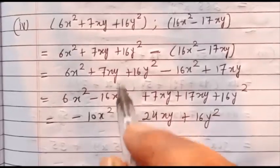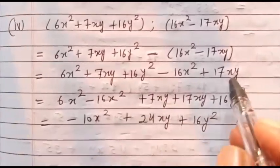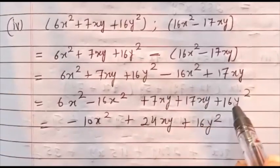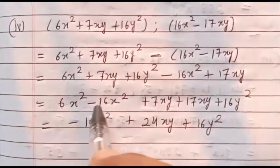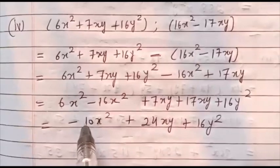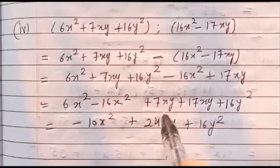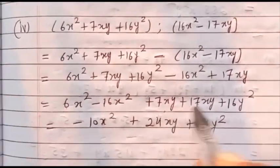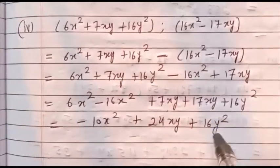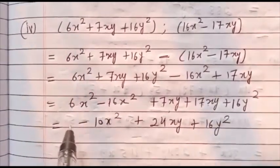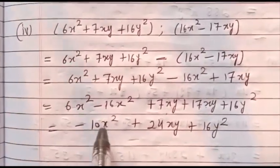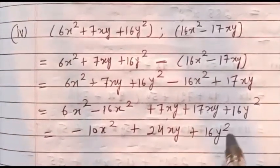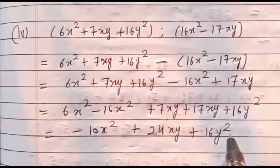Collect the like terms: 6x² minus 16x², then 7xy plus 17xy, then plus 16y². Now 6 minus 16 is minus 10x². 7 plus 17 is 24xy. Plus 16y². So the answer is minus 10x² plus 24xy plus 16y².